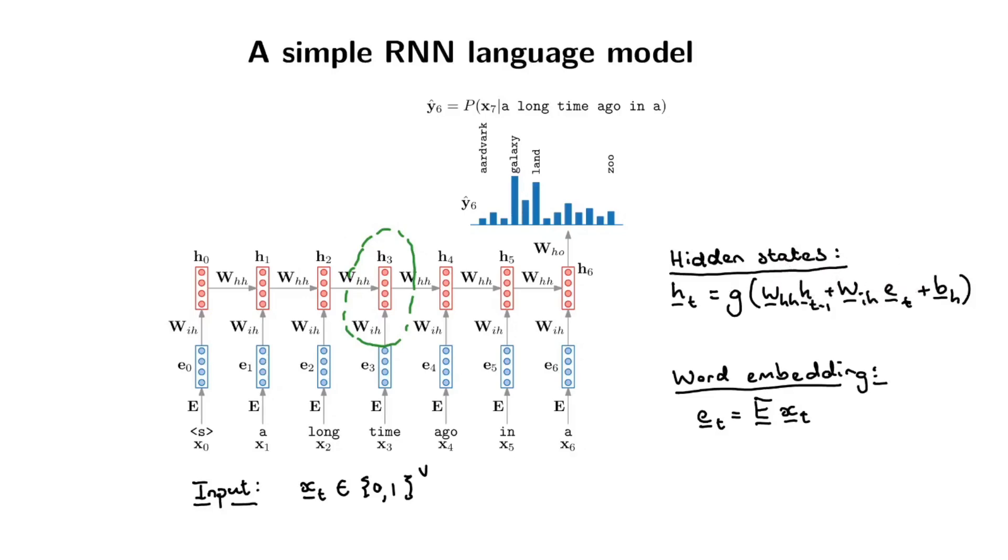In some notes you will see that they actually stack ht minus one and et and then have one weight matrix which combines them. That's equivalent to what I'm doing here. I like this way of splitting them up because then you can see that the recurrent neural network takes both the current input into account but it also takes into account what happened at the previous time step. That's your hidden state at this time step h3.